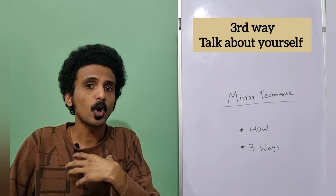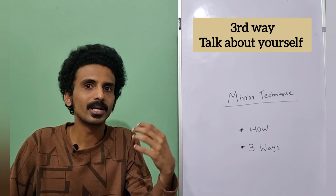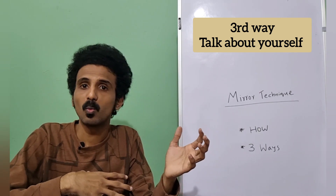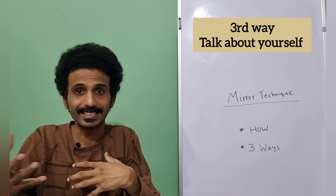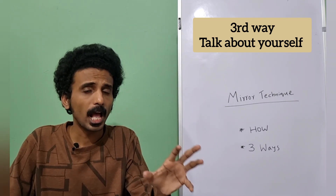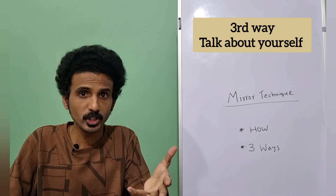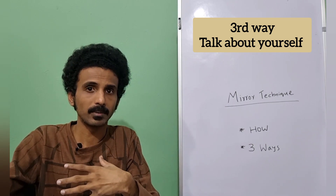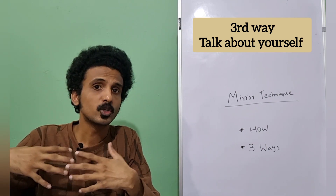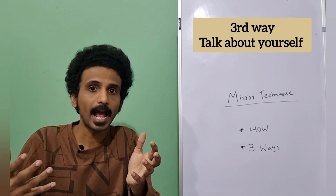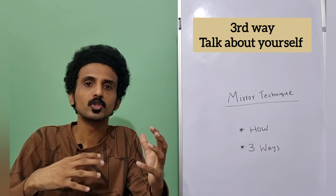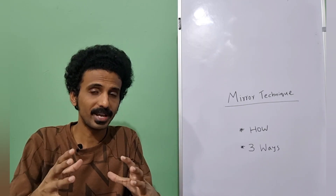The third effective way is to talk about yourself. Look at the camera or mirror and talk about where you come from, what you do for a living, your likes and dislikes, your hobbies. This practice is really helpful when you have an interview, when you are meeting someone for the first time, or when you need to introduce yourself. It is a really effective method for those situations.